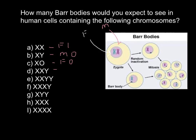It happens in one from 500 to 1,000 newborn males. This is going to be male because the Y chromosome is present, and one Barr body would be formed.